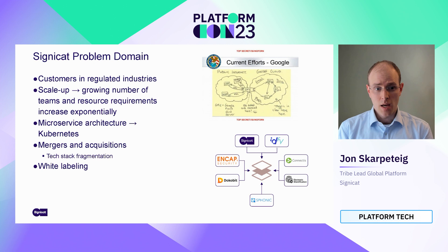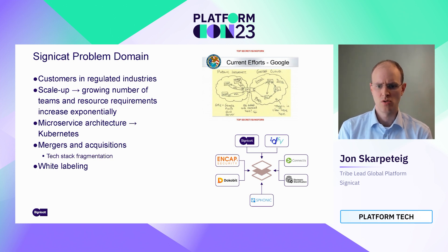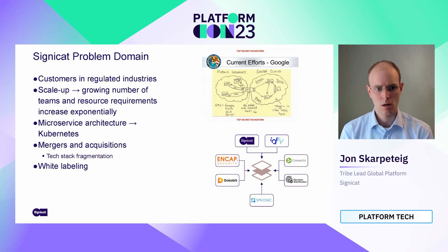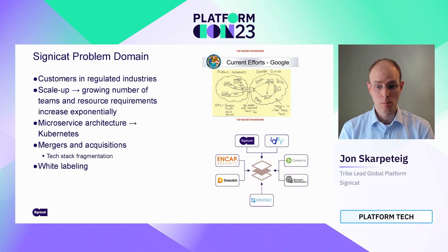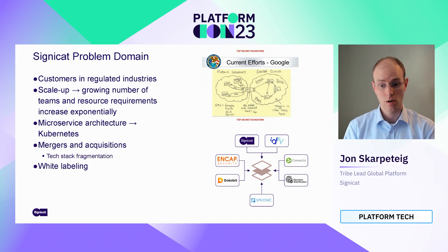We are also seeing an exponential increase in capacity requirements, so we absolutely need dynamic scaling. And we have, through mergers and acquisitions, quite a fragmented tech stack. So we have Java, .NET, PHP — they all communicate through APIs with a microservice approach. And on top of this, we have white labeling. So we have a number of customer domains pointing to our servers, each with their own security requirements and their own certificates, that all need to seamlessly integrate into the platform.